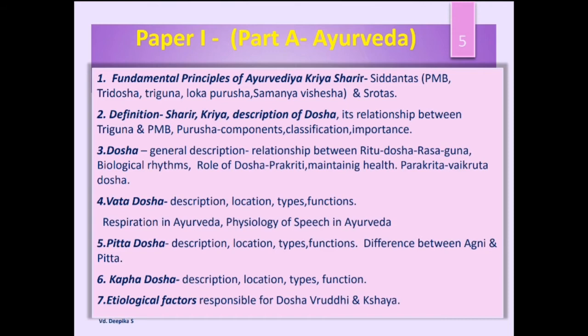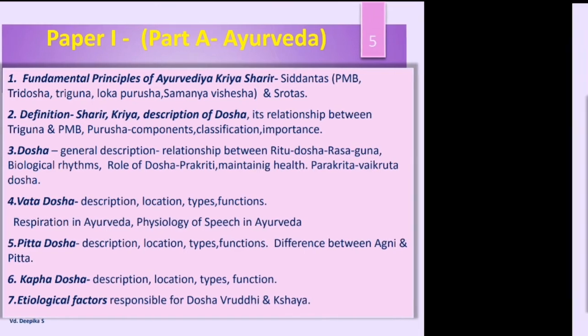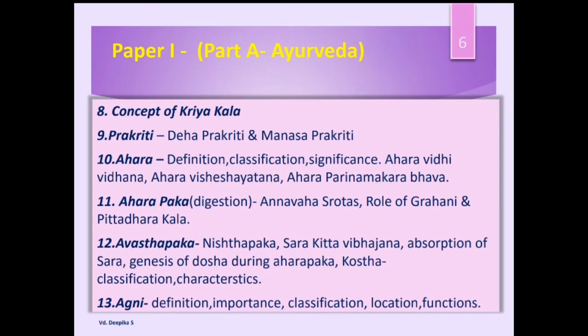After learning the Doshas, we are going to see the etiological or causative factors responsible for their increase as well as decrease. Next, we will study the concept of Kriya Kala and the concepts of Prakriti — that is, human body constitution — including Deha Prakriti as well as Manasa Prakriti. After that, we will have a topic called Ahara, covering its definition, classification, and importance. Approximately 13 topics are covered in Paper 1, Part A — the Ayurveda portion.